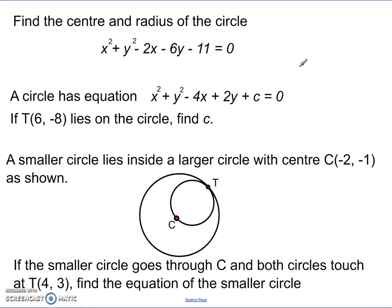First question: find the centre and radius of the circle given by the general equation x squared plus y squared minus 2x minus 6y minus 11 equals 0. Second question: I've given you a circle's general equation but I've kept the point c out, i.e. it's plus c. I've told you a point lies on it — find c.